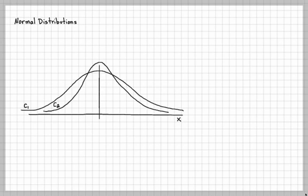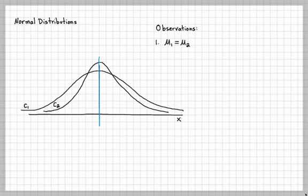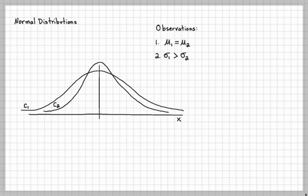Let's draw curve two. You'll see it has a different type of spread. The first observation is that mu for curve one is the same as for curve two — both curves are at the same location, so they have the same mean. The second observation is that the spread of curve one is larger than the spread of curve two.